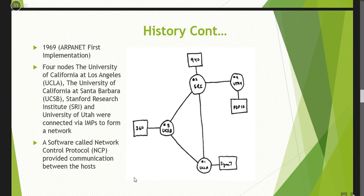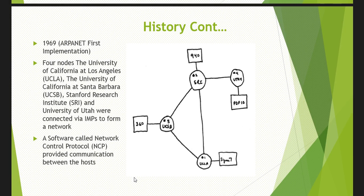In 1967, the first implementation had four nodes: the University of California at Los Angeles (UCLA), the University of California at Santa Barbara (UCSB), Stanford Research Institute (SRI), and the University of California at Stanford. Communication between them used a networking software called Networking Control Protocol (NCP), the protocol for communication between hosts.